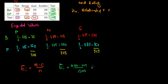Let's verify with one cell to prove the point. The expected value for the blue-poor cell was 75. Using the formula: row total (500) times column total (225) divided by overall total (1,500) equals 75. It works out to the same value.